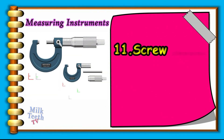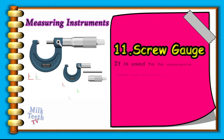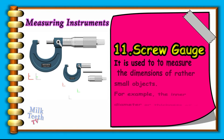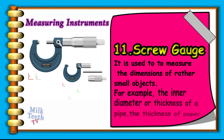Screw Gauge, also known as a Micrometer. It is used to measure the dimensions of rather small objects — for example, the inner diameter or thickness of a pipe or a sheet of paper.